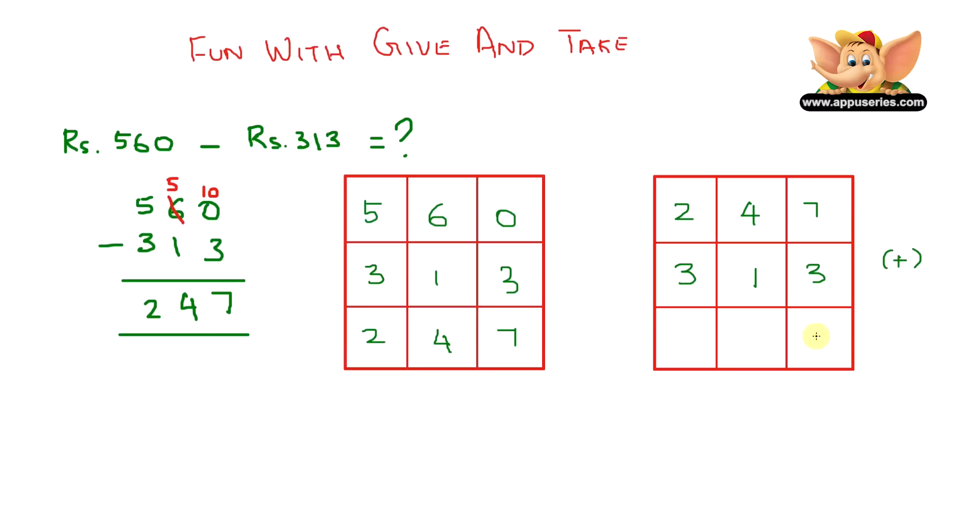So let's do this with the ones column first. We have 7 plus 3 equals 10. So we write 0 over here and we carry the 1 over to the tens column. So we now have 1 plus 4 plus 1 equals 6. Now the next one, the hundreds column, is 2 plus 3 equals 5. So it's 560. See, we've got the right answer. Isn't that pretty cool how you can check whether you got the right answer or not?